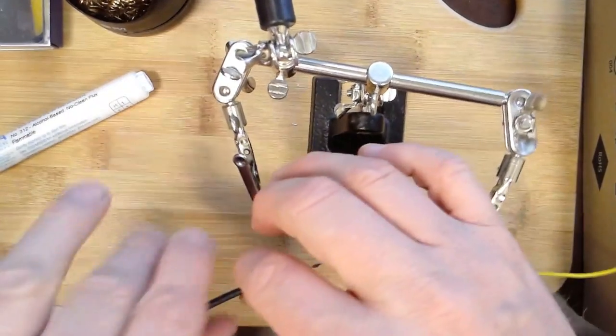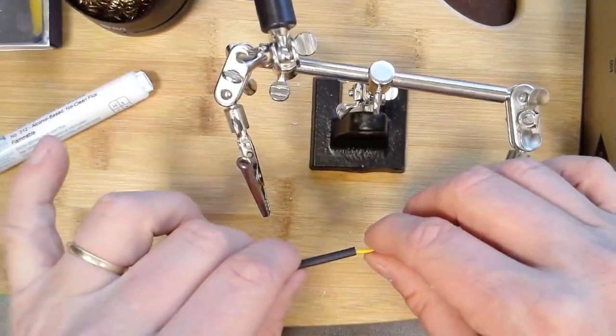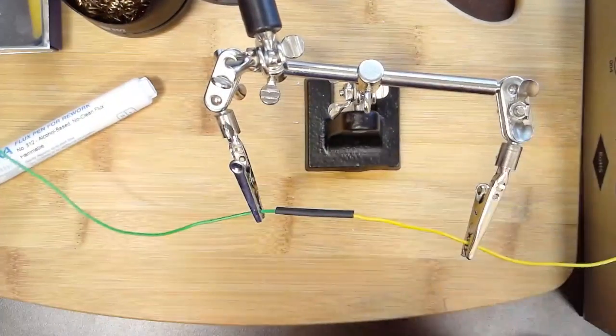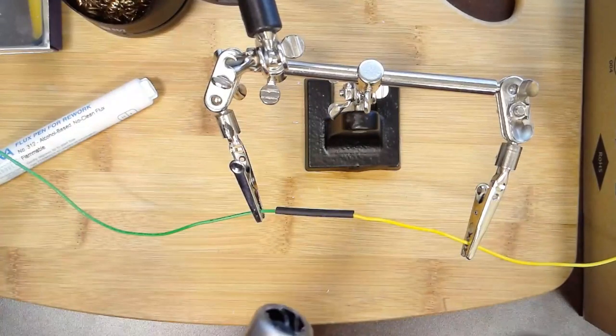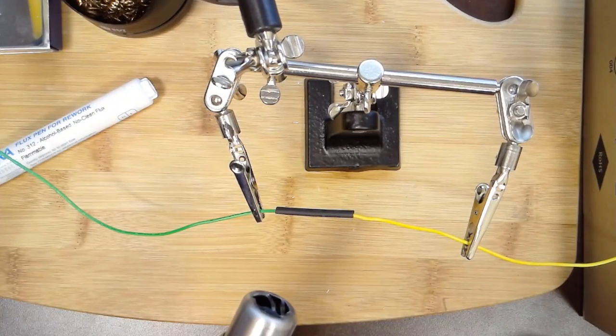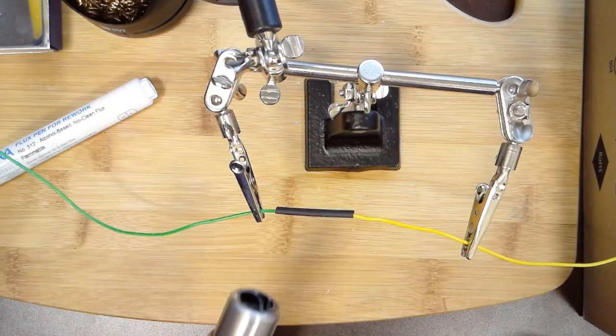Now, my little soldering station—this is the 898D Plus I got off of Amazon—has a little heat gun on it, and I'm going to use that to shrink the tubing around it.